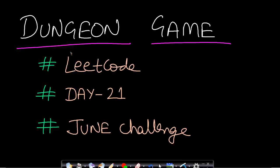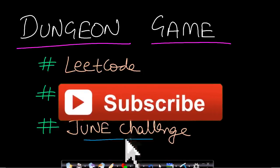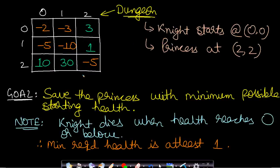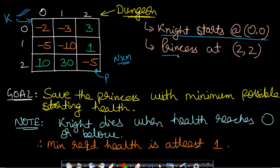Hello guys, welcome back to Tech Dose. In this video we will see the Dungeon Game problem from LeetCode, day 21 of the June challenge. In this problem we are given a dungeon which is a n by m matrix. Our goal is to save the princess, who is present at the bottom right cell. The knight always starts from cell 0,0, and the princess is at the last cell, which is 2,2 in this example.